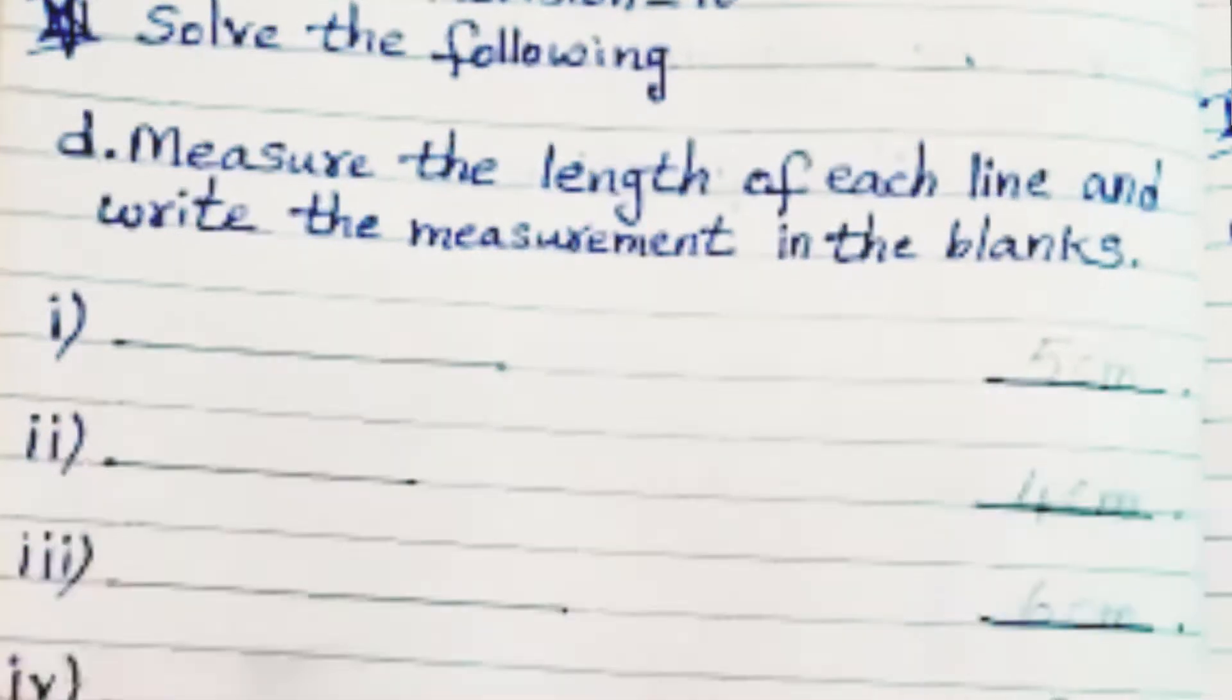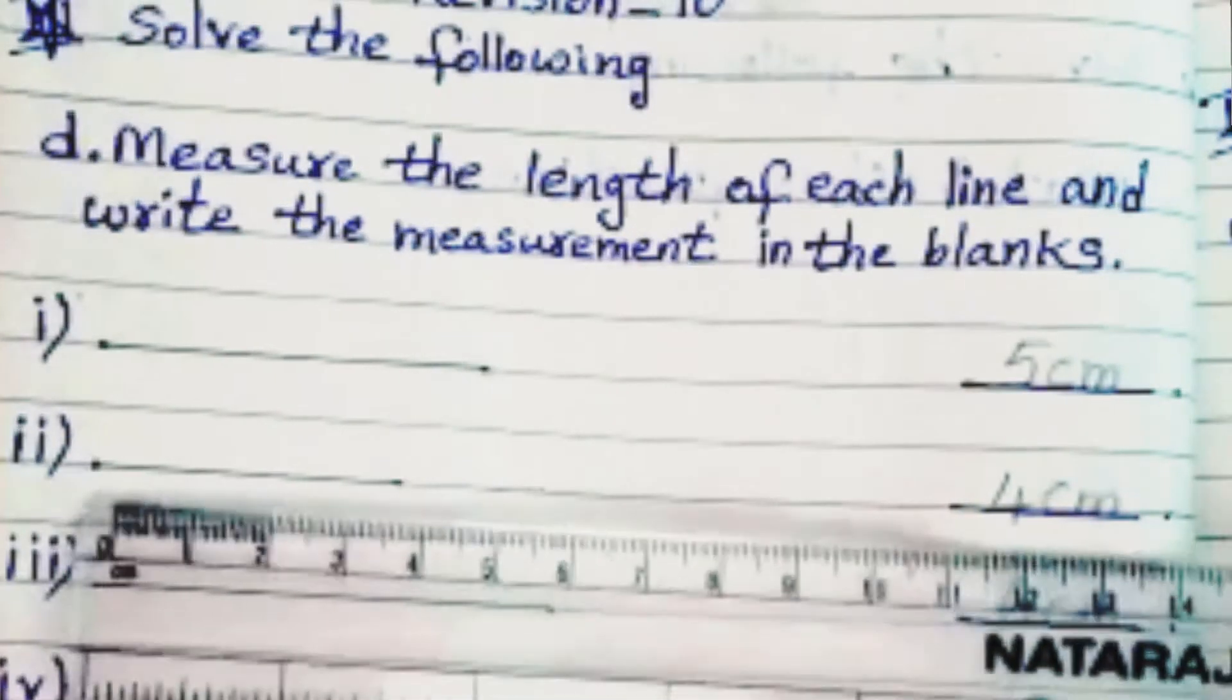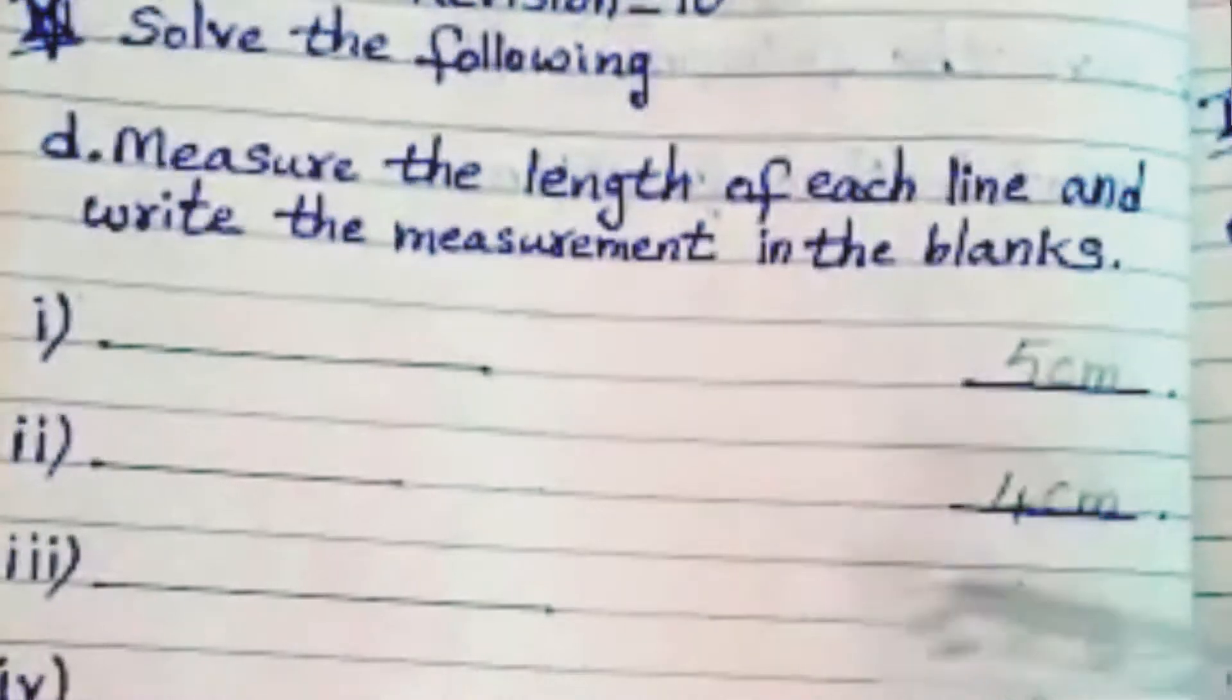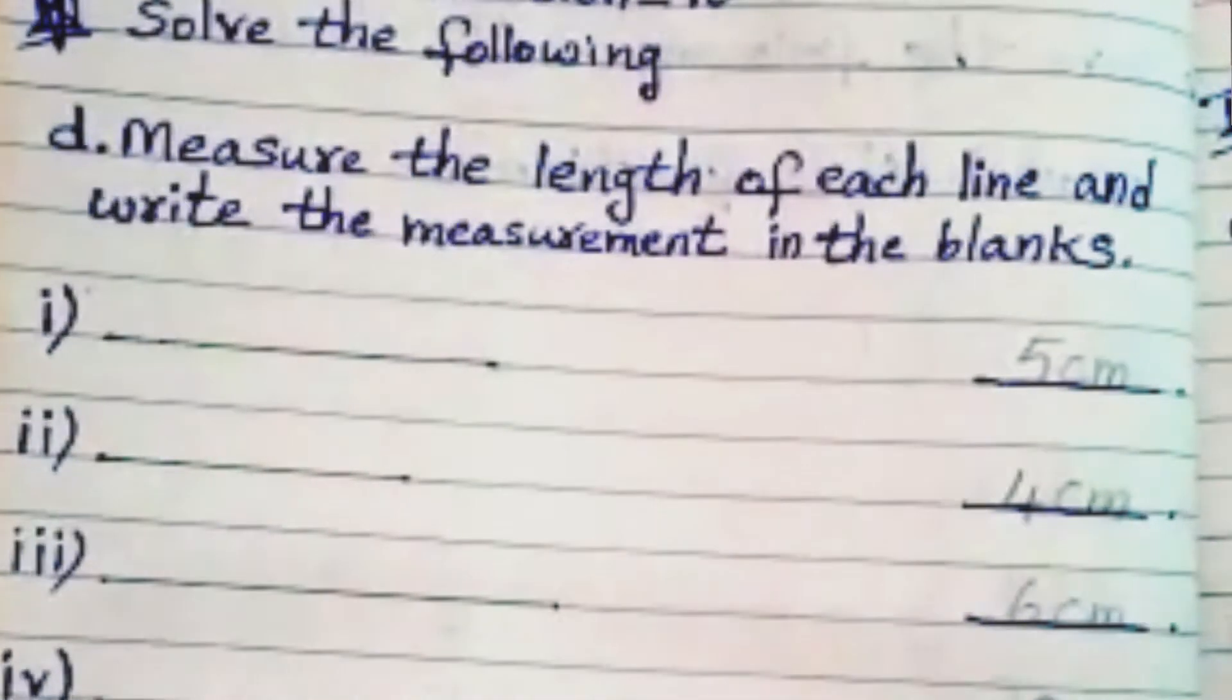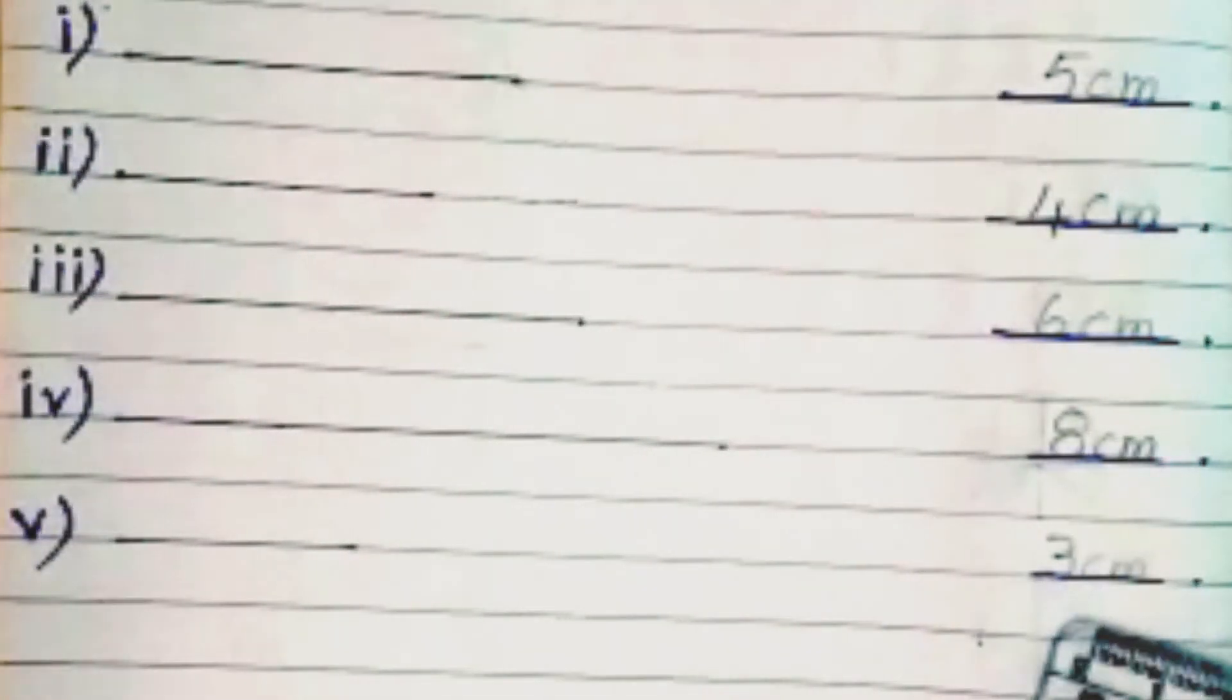Likewise, check the second line measurement. This indicates 4 centimeters, third line 6 centimeters, fourth line 8 centimeters, and fifth line 3 centimeters.